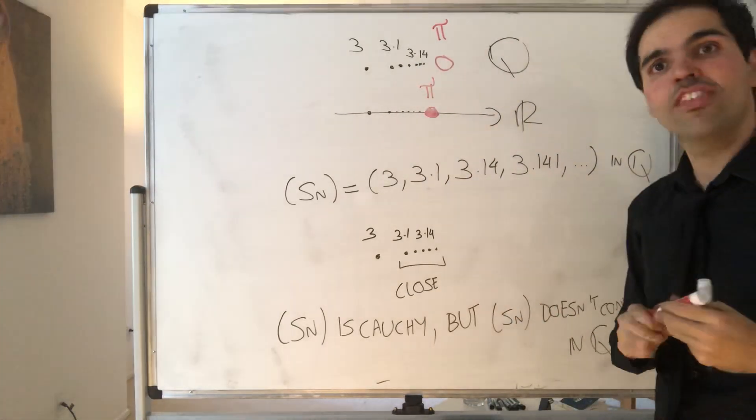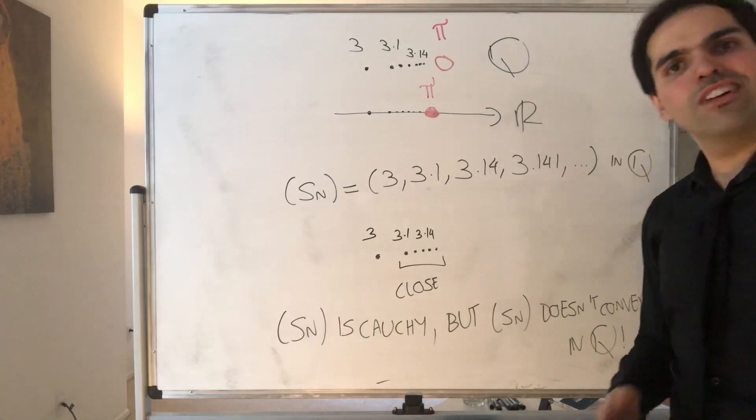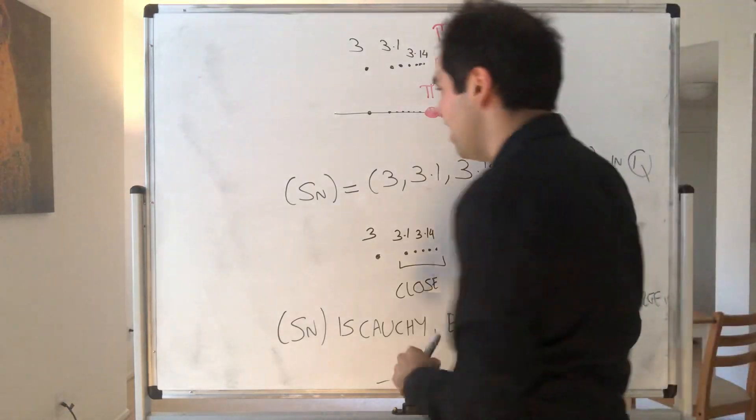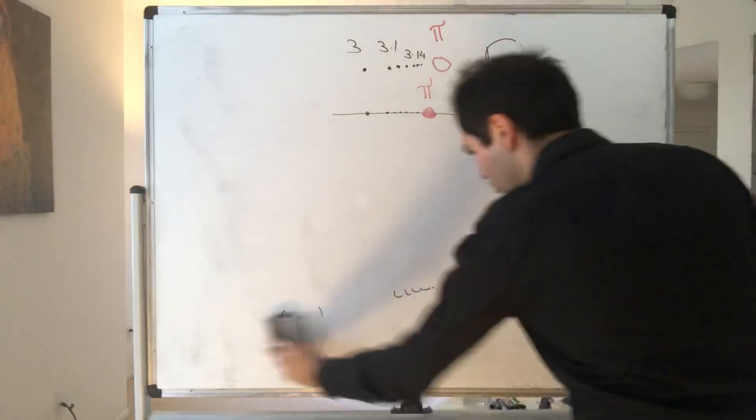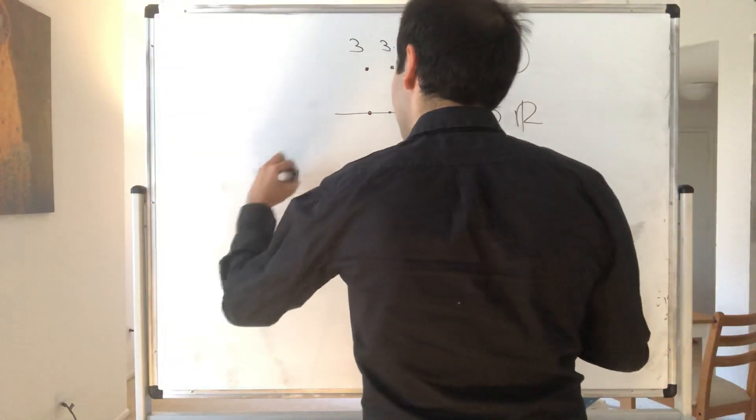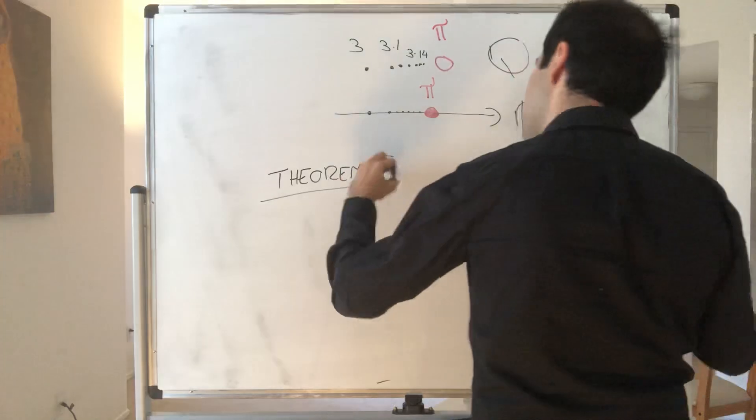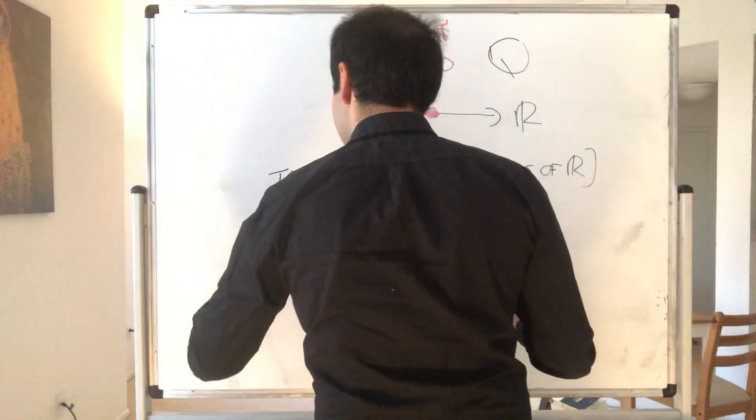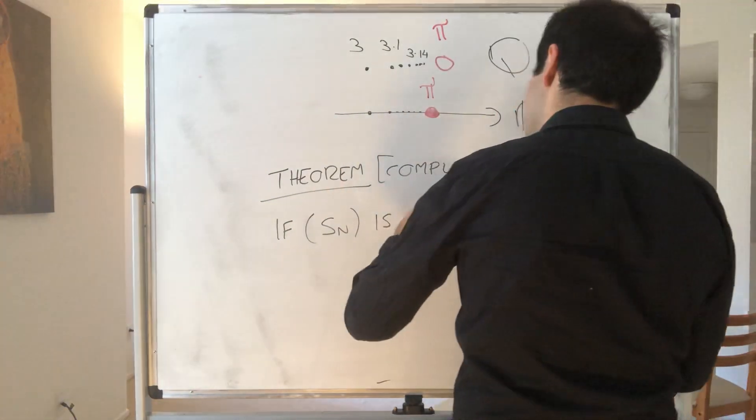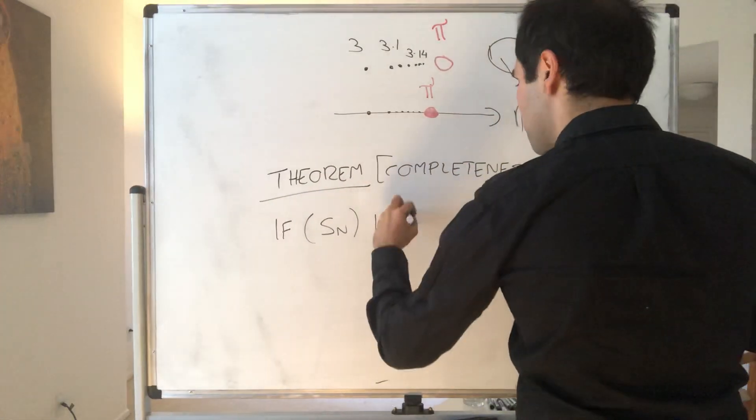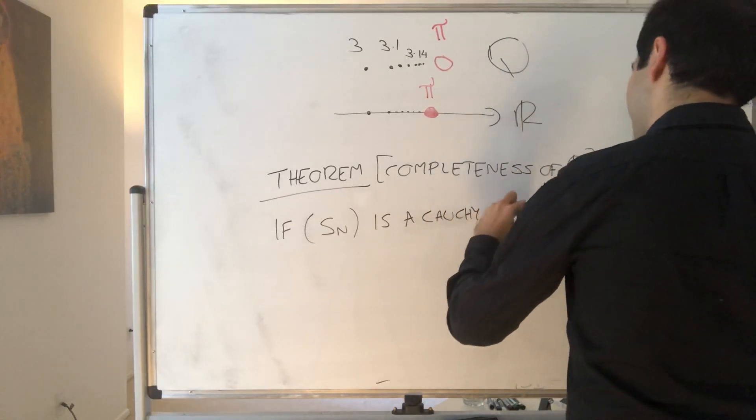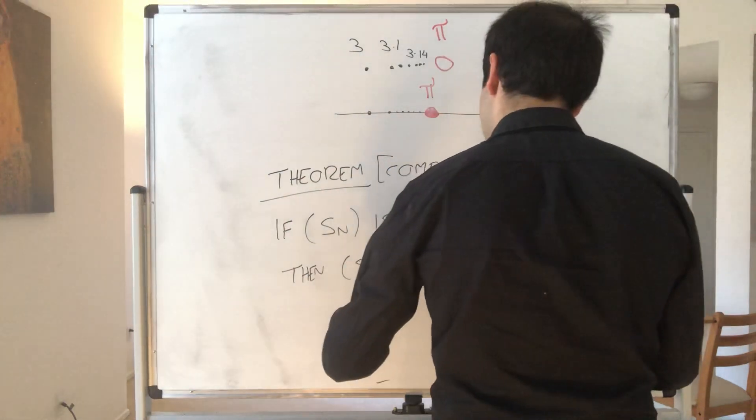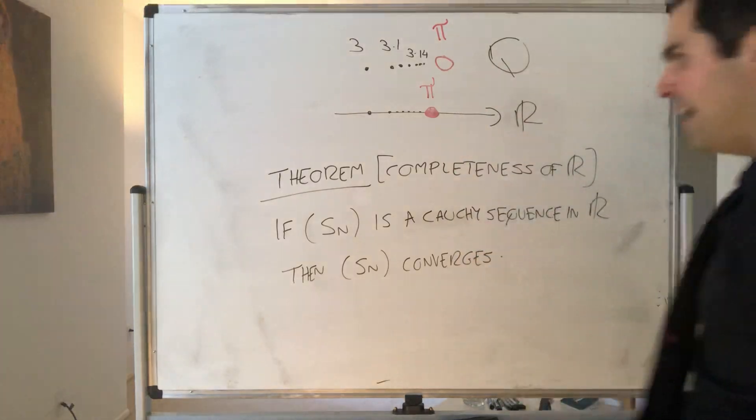And in fact, the beautiful thing is, in the real numbers, this is always true. So for the special case of R, Cauchy sequences are convergent. So in that special case, Cauchiness and convergence is the same. And this is what we'll prove today. So theorem, and that's sometimes called completeness of R, namely, if Sn is a Cauchy sequence in R, then Sn converges.